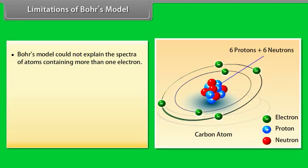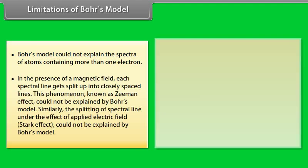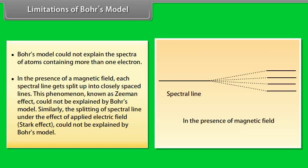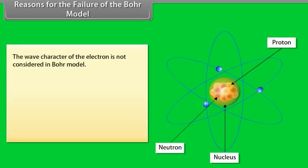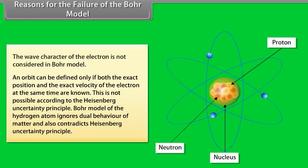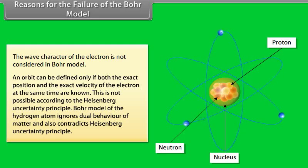Limitations of Bohr's model: (1) Bohr's model could not explain the spectra of atoms containing more than one electron. (2) In the presence of a magnetic field, each spectral line splits into closely spaced lines — the Zeeman effect — which Bohr's model could not explain. Similarly, splitting of spectral lines under an applied electric field — the Stark effect — could not be explained. (3) The wave character of the electron is not considered; defining an orbit requires knowing both exact position and exact velocity simultaneously, which is impossible according to Heisenberg's uncertainty principle. Bohr's model ignores dual behavior of matter and contradicts Heisenberg's uncertainty principle.